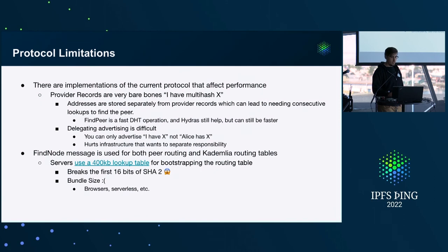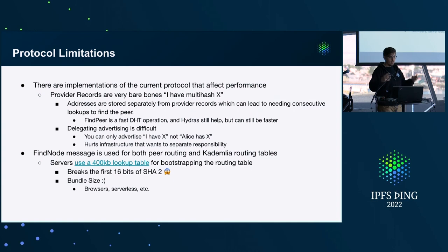There are also protocol limitations, such as provider records: you can only tell someone else that you have a multi-hash — you can't tell them that somebody else has a multi-hash. That creates a lot of difficulties. You can't split the system so that, say, that machine over there has this multi-hash. Also, if you could batch who has a record with their addresses, you could reduce the chatter a bit. And there's a big lookup table used for bootstrapping the routing table that's about 400 kilobytes, which bloats your code size.